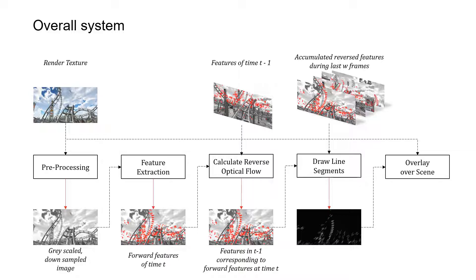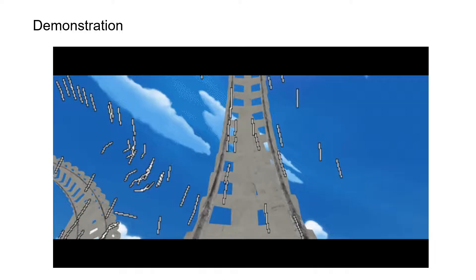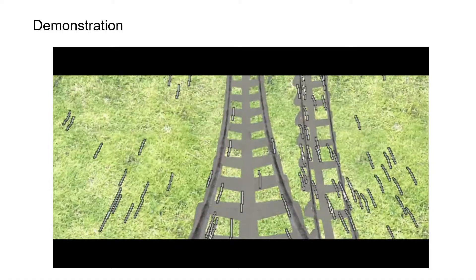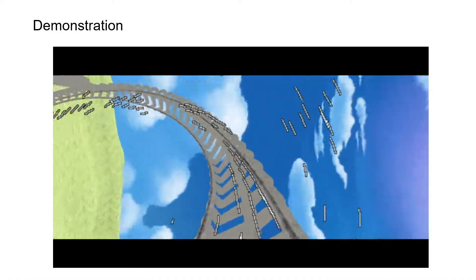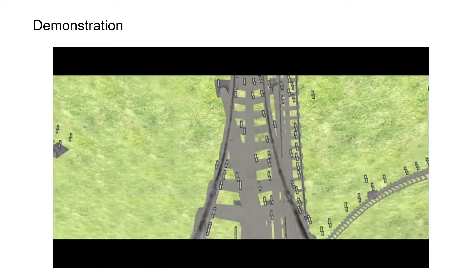This is the overall system, which operates online. The rendered image frame of the given content is preprocessed to be downsampled and converted to a grayscale image. Then the algorithm is applied, line segments are drawn and overlaid on the image frame. Let's see the video. Even though this is a small field-of-view desktop video, perhaps one might be able to appreciate the sickness reduction effects.